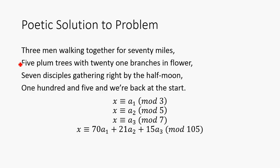Well, that's pretty interesting. What does all this mean? As you can see, here we have the 70 that he was talking about in the first line, the 21 on the second line, and the 15 on the next one, and those correspond to the 3, 5, and 7, which were the moduli for each one of those. Then we have this 105, which happens to be the product of these numbers. And he says that 105, and we're back at the start, so that's going to be our big modulus.